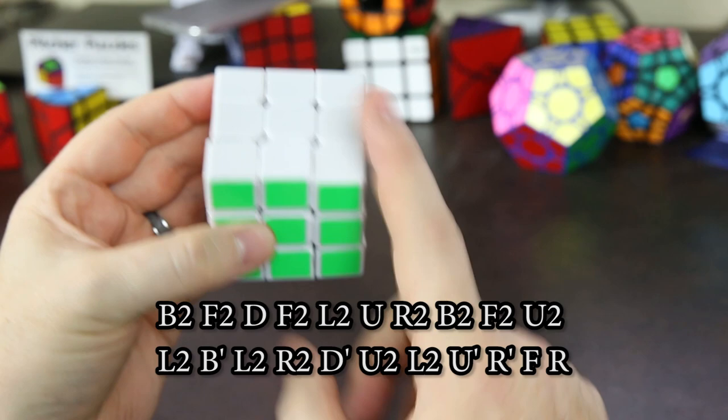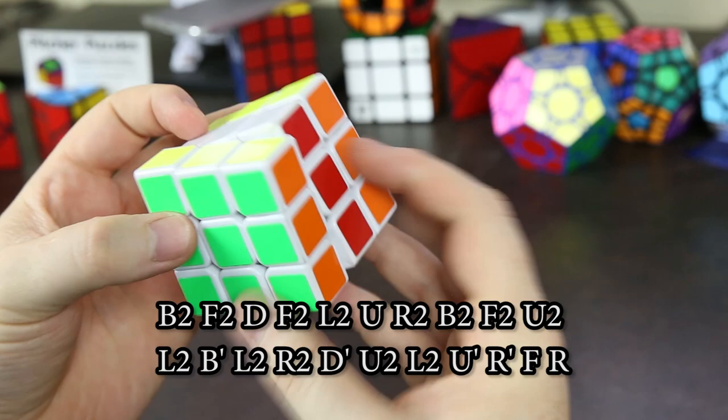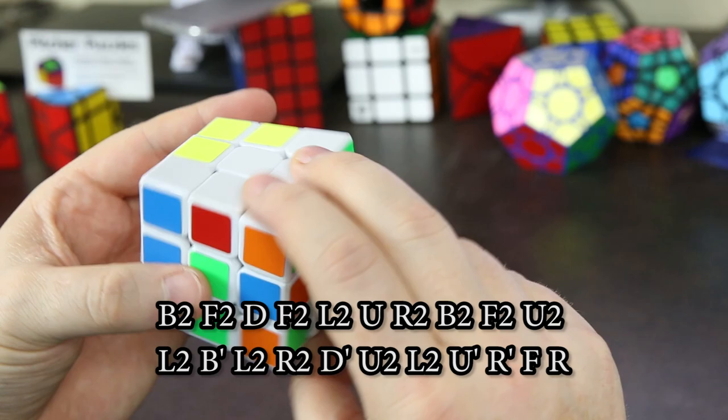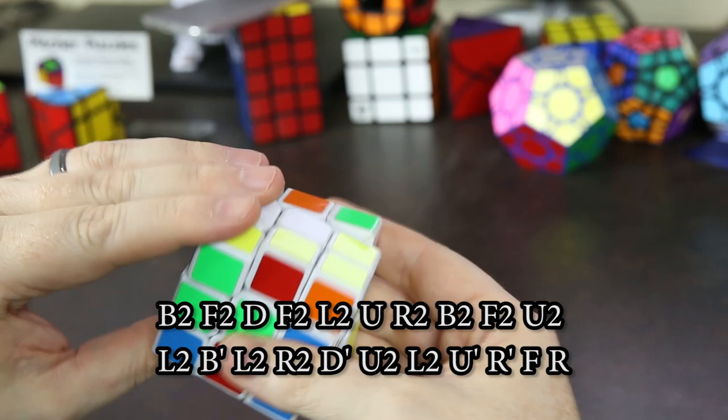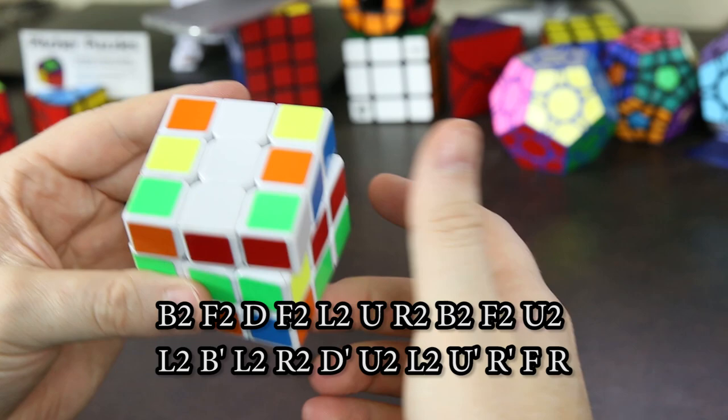And we're going to do this algorithm: it's back to front to down, front to left to up, right to back to front to up to left to back inverted, left to right to down inverted, up to left to up inverted, right inverted, front and right. So now our cube is exactly like Matz Valk's cube, and we have 15 seconds of inspection.